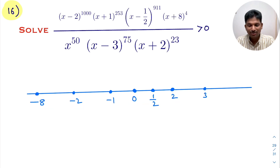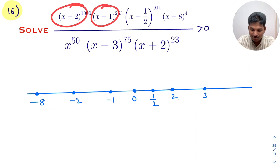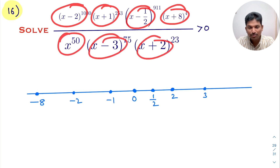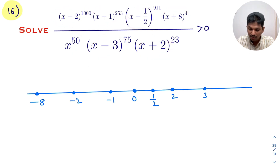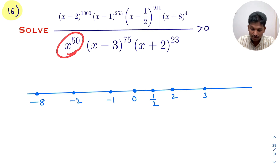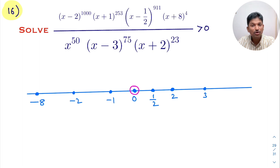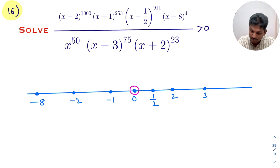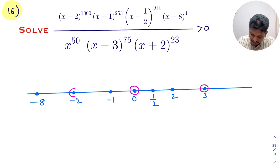All 7 critical values are marked on the number line. Since this is a rational function, the denominator cannot be zero. When x = 0, denominator is 0 — open circle at 0. When x = 3, denominator is 0 — open circle at 3. When x = -2, denominator is 0 — open circle at -2.